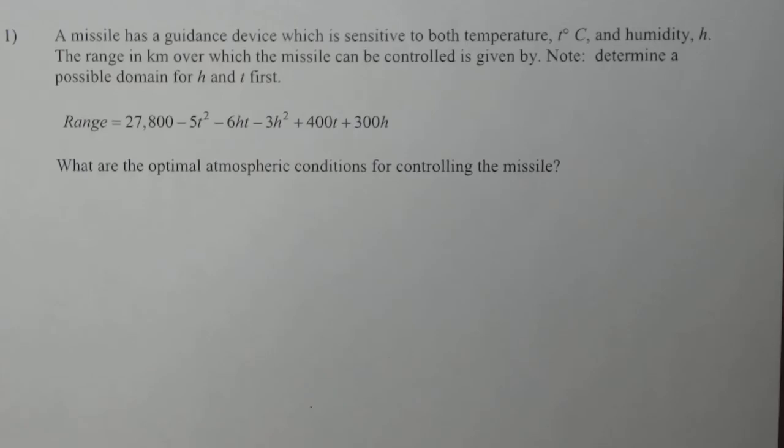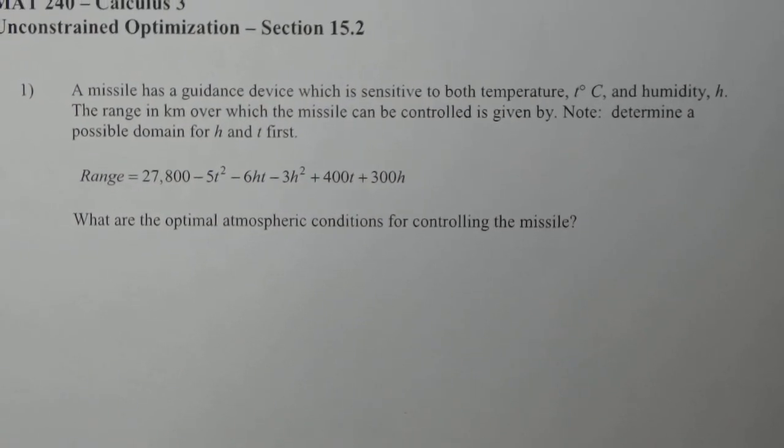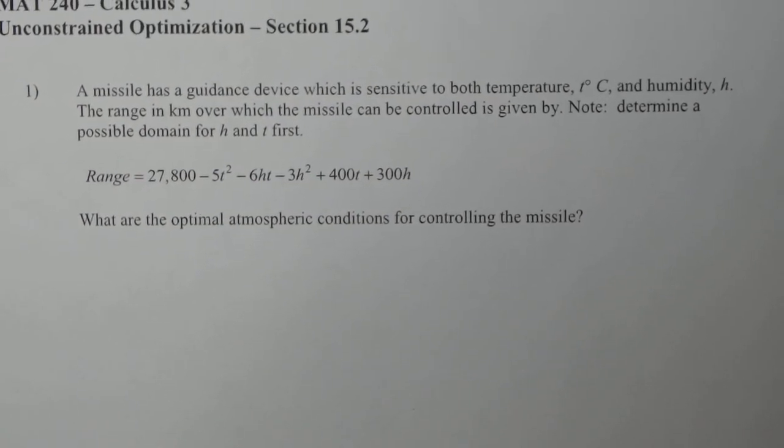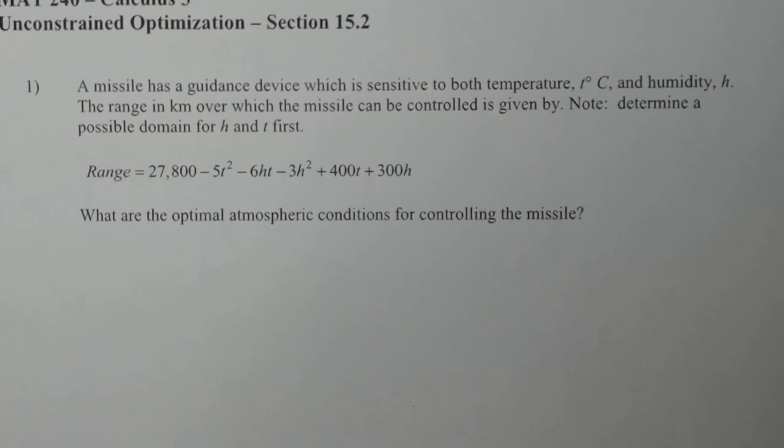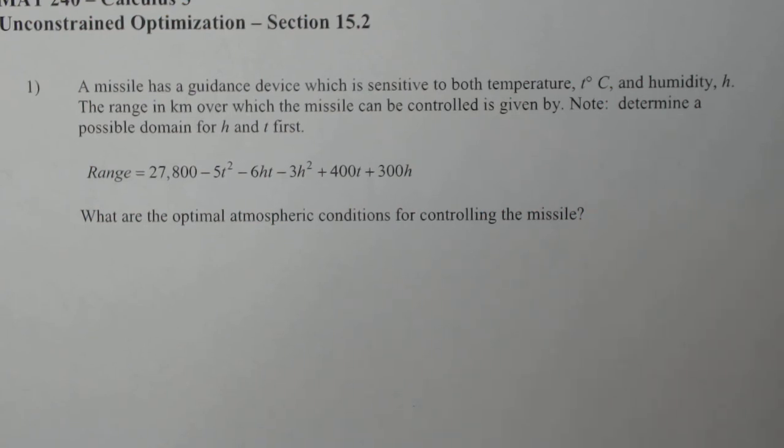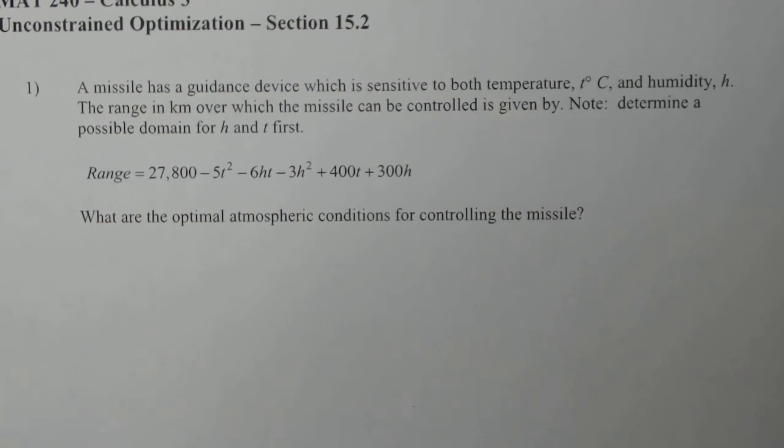Okay, this is a problem from 15.2 in our textbook. It's called unconstrained optimization. So we're doing optimization in 3D calculus, but we don't have a constraint. If you have a constraint, use Lagrange multipliers, but we don't have that, so we have to use some other tricks to solve the problem.